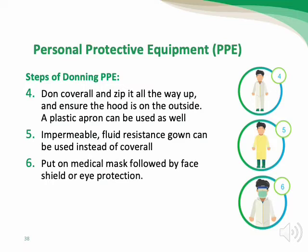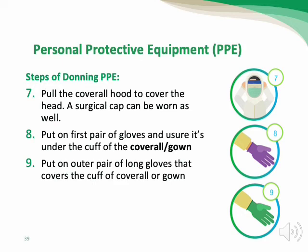Step 5: an impermeable fluid-resistant gown can be used instead of coveralls; if using a gown, remember to use a head cover. Step 6: put on the medical mask followed by face shield or eye protection. Step 7: pull the coverall hood to cover the head; a surgical cap can also be worn. Step 8: put on the first pair of gloves, tucked under the cuff of the coverall or gown. Step 9: put on the outer pair of long-cuffed gloves that cover the cuff of the coverall or gown.